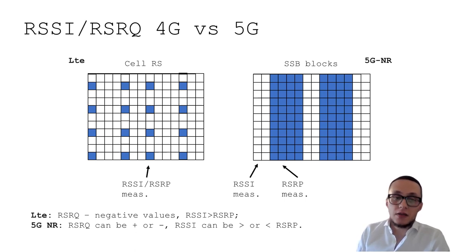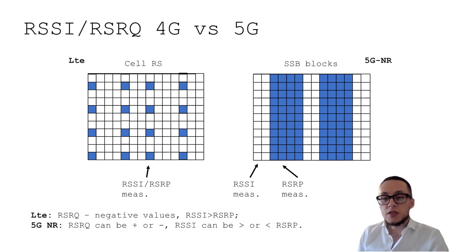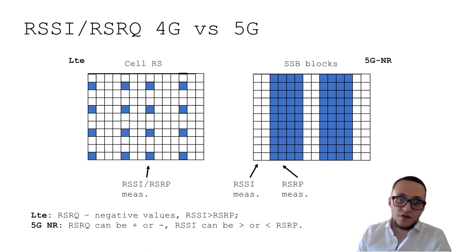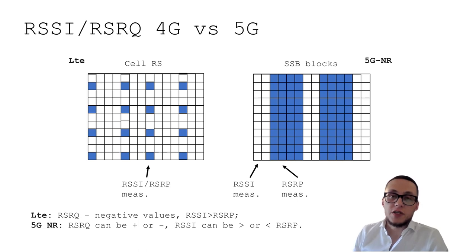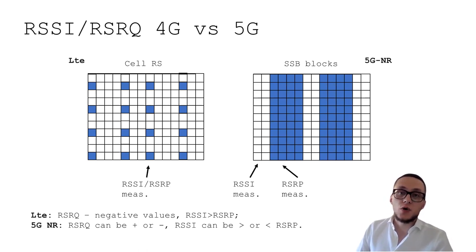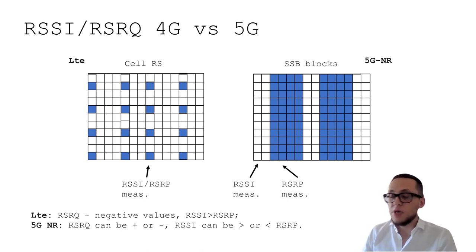In LTE, RSRQ is always a negative value and RSSI is higher than RSRP. But in 5G, RSRQ can be positive or negative, and RSSI can be better or lower than RSRP values — which can be quite confusing at first. Especially when doing drive tests in a 5G network and comparing 4G and 5G metrics, you should be aware of this difference.